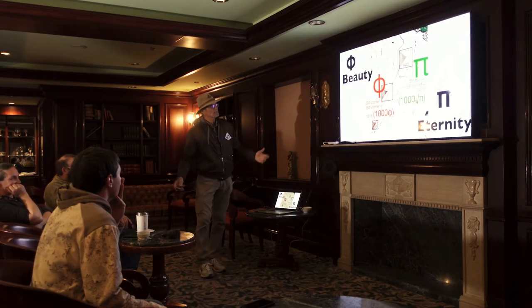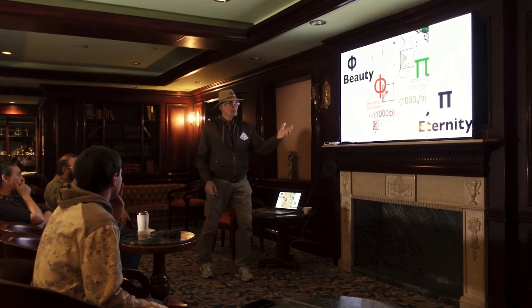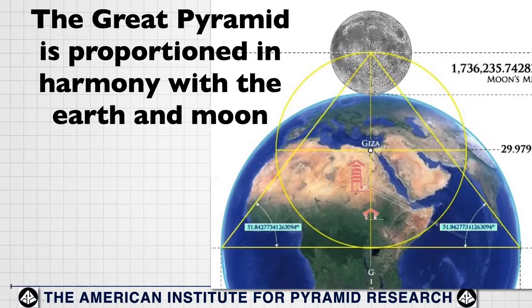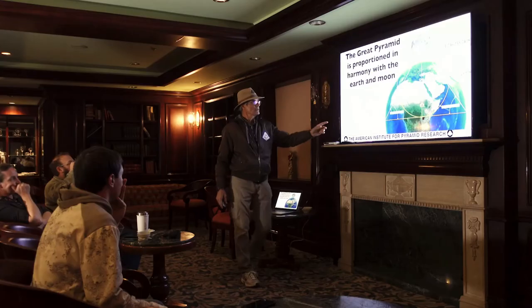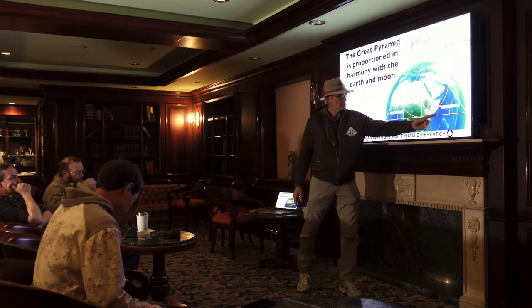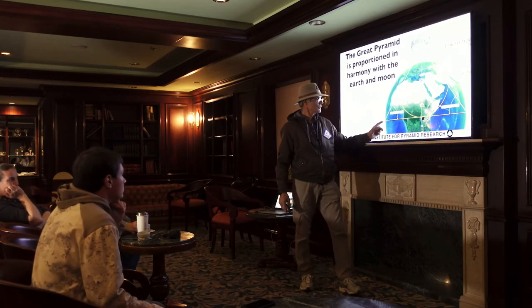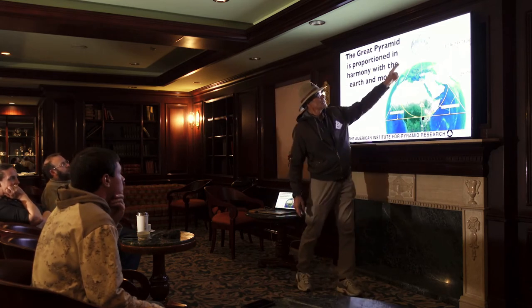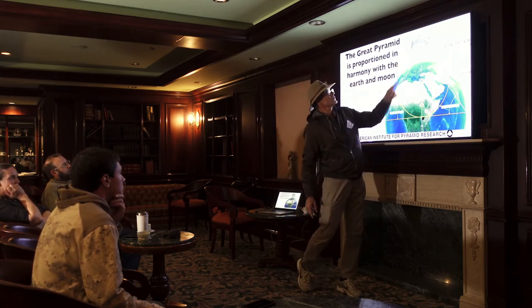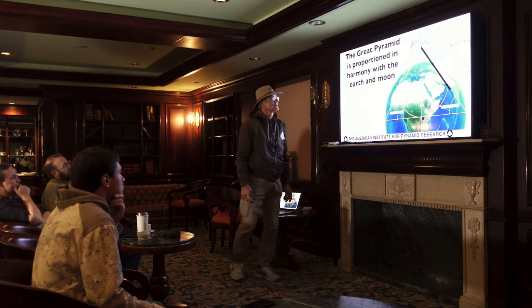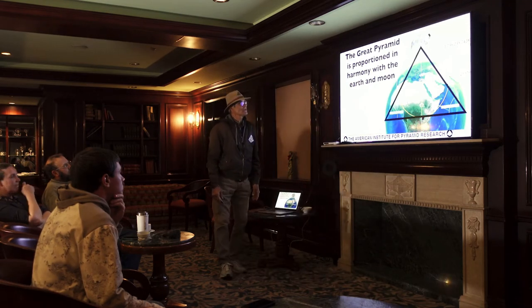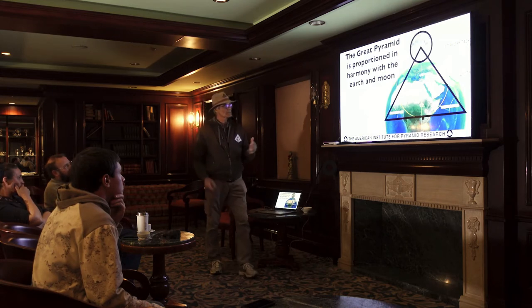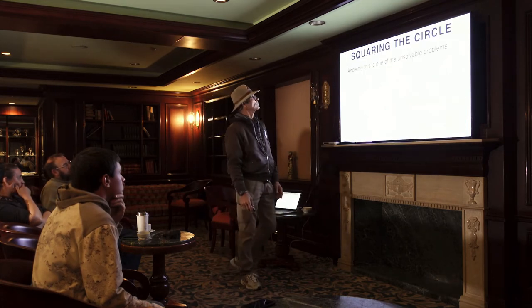Phi is the great constant used in beauty; Pi, to me, symbolizes eternity. The Great Pyramid is in proportion and harmony with the Earth and the Moon. If you superimpose the dimension of the Great Pyramid over the equator so that the base is at the equator and let it go up, it would go to exactly where the center of the Moon is. In a sense, the Great Pyramid is connected to the Earth and the Moon.